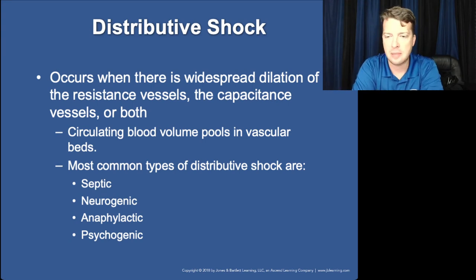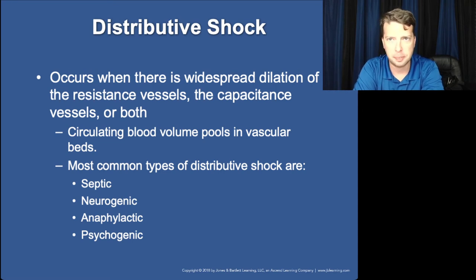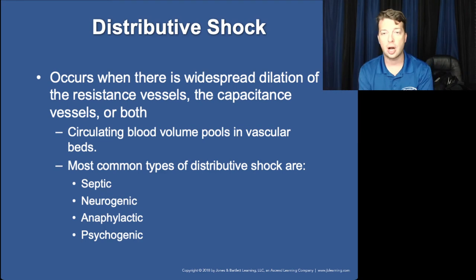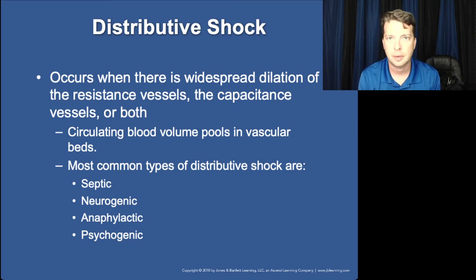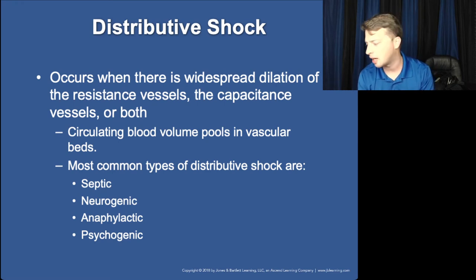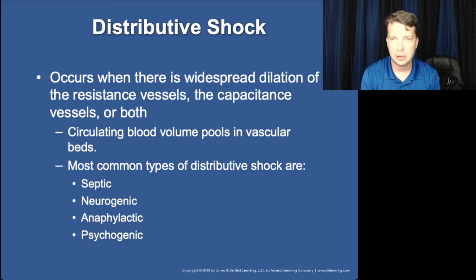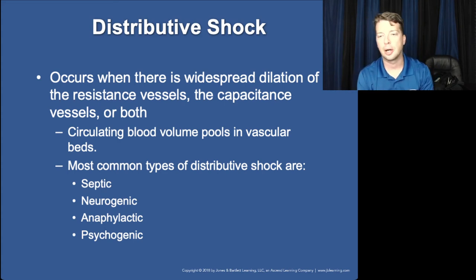The next major category is distributive shock. I mentioned three types earlier but forgot psychogenic shock. Psychogenic shock or psychogenic syncope is very temporary — it's been popularized in classic movies. Something causes a psychological disruption in your brain, your brain forgets to cause vasoconstriction throughout the body, and all vessels dilate instantaneously. It's similar to getting up too fast after sitting for hours and feeling light-headed, except with psychogenic shock it happens instantaneously and you just pass out due to sudden vasodilation.